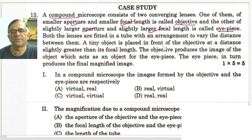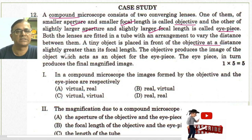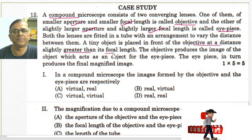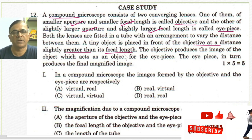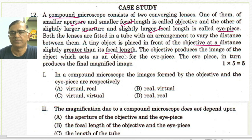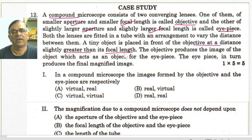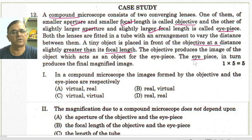A tiny object is placed in front of the objective at a distance slightly greater than the focal length. As the object is placed slightly beyond the focal length, it effectively lies between f and 2f. Its image will be on the other side — it will be real, inverted, and magnified. This image then acts as an object for the eyepiece, and the eyepiece in turn produces the final magnified image.